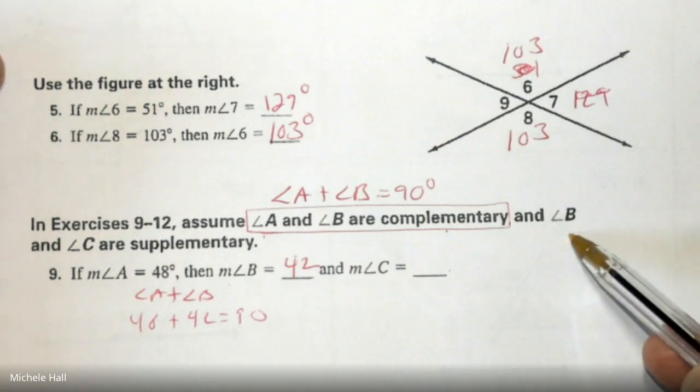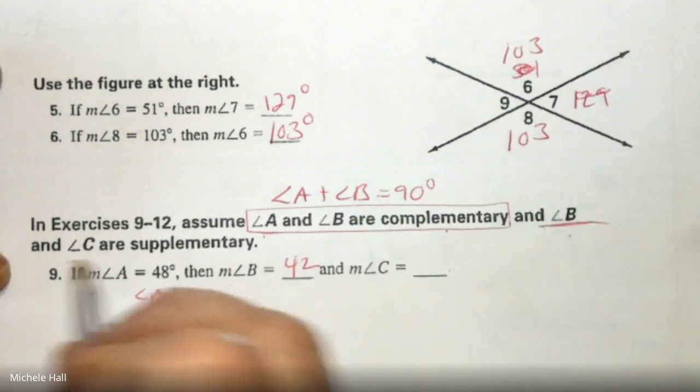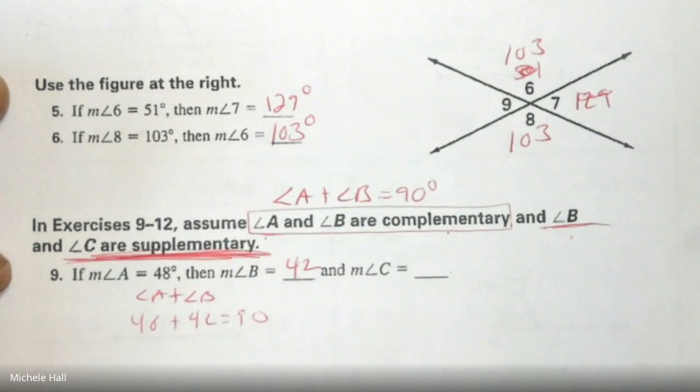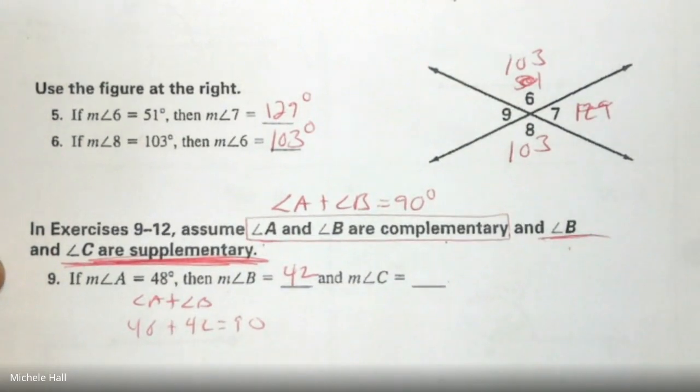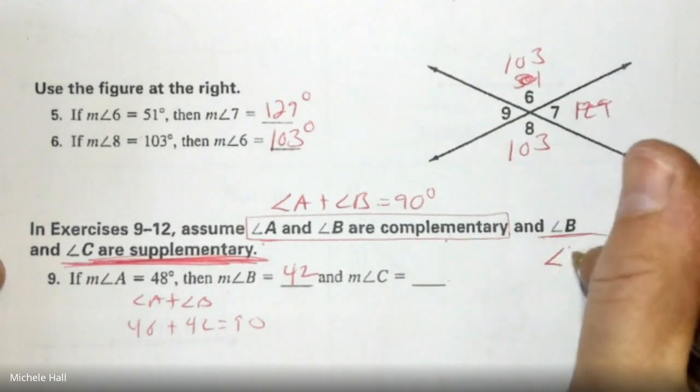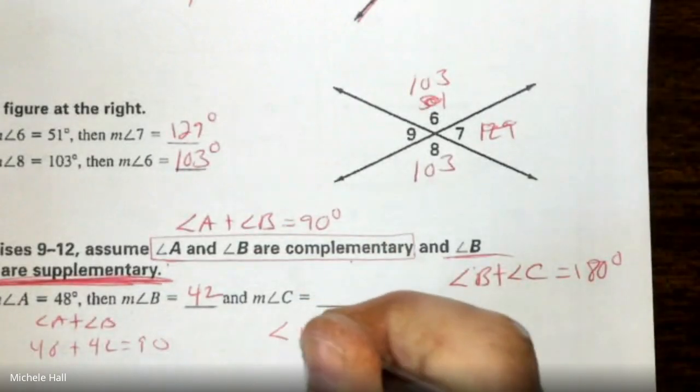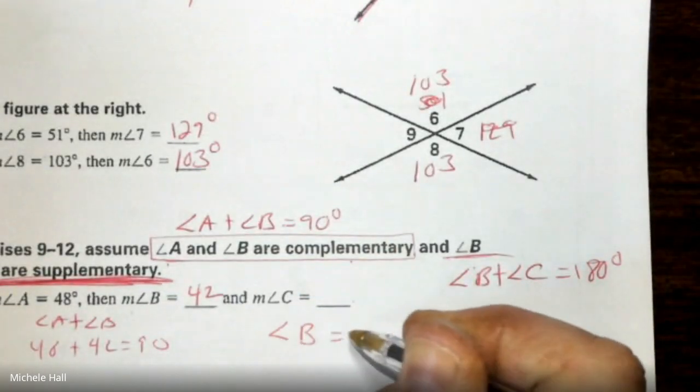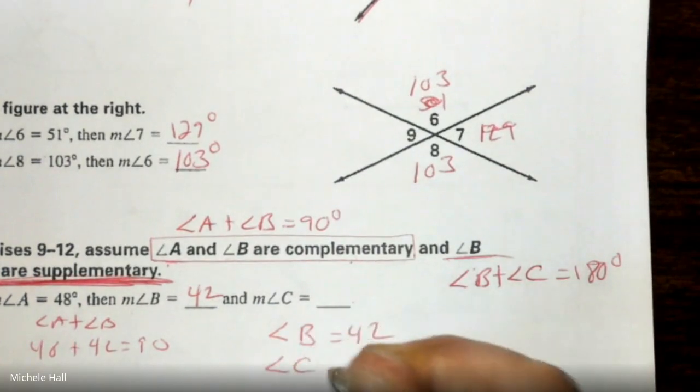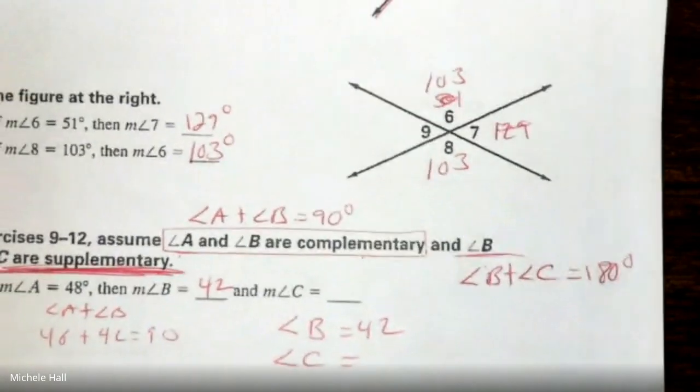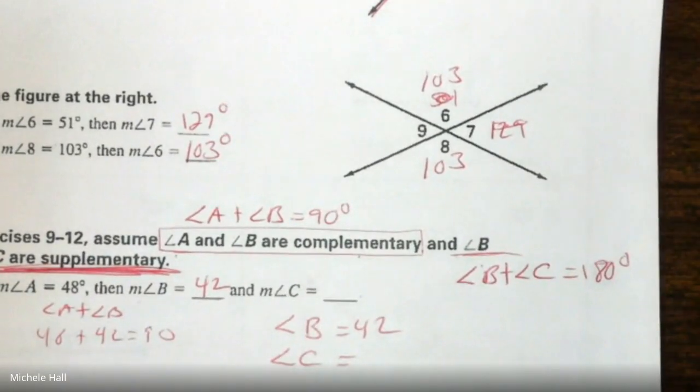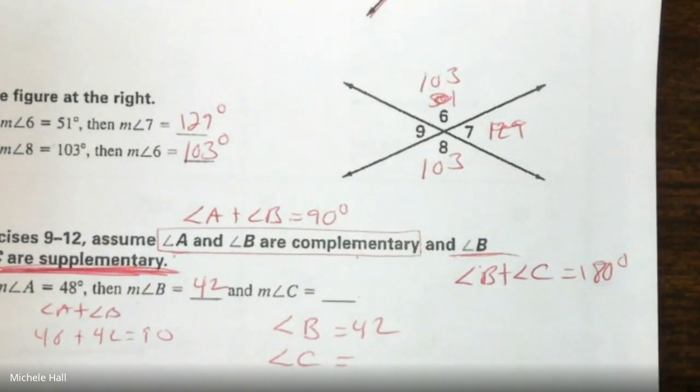All right. The next piece of information says that Angle B and Angle C are supplementary. What does that mean? Angle B and Angle C are supplementary. That means that Angle B plus Angle C, the sum of their measures, equals 180. So if I know that Angle B equals 42, how much is Angle C going to be? So 180 minus 42 is 138.